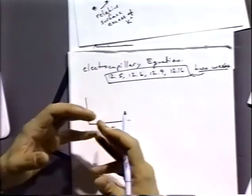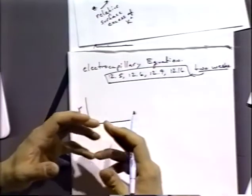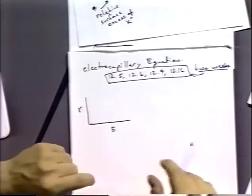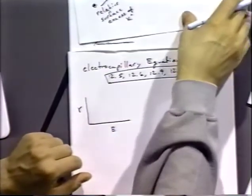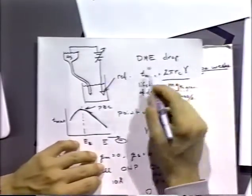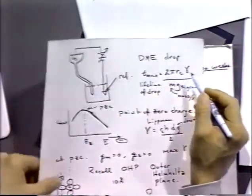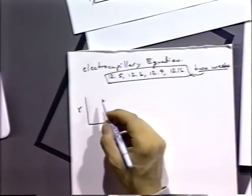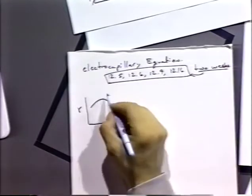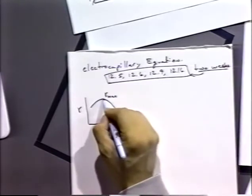How do we get that? We can measure the drop time, the maximum drop time. And if you remember that drop time maximum is directly related to the surface tension, we can get the surface tension directly from those measurements. And if we plot surface tension versus potential, we get this parabolic curve and we get a lambda max value right at the top.